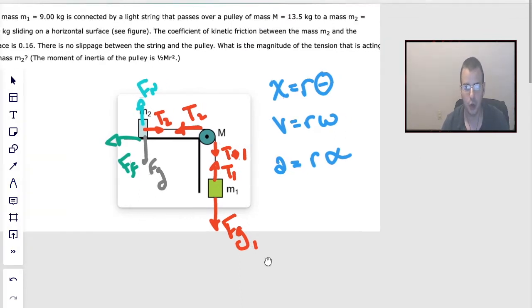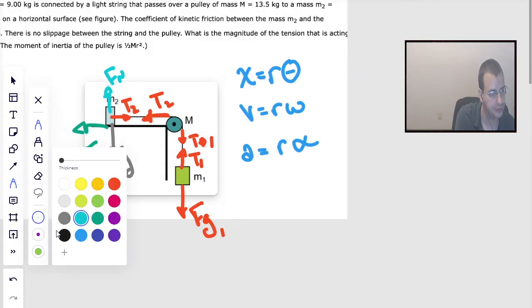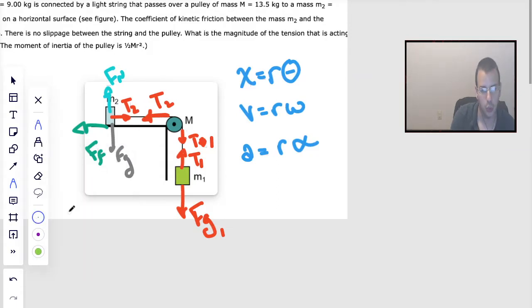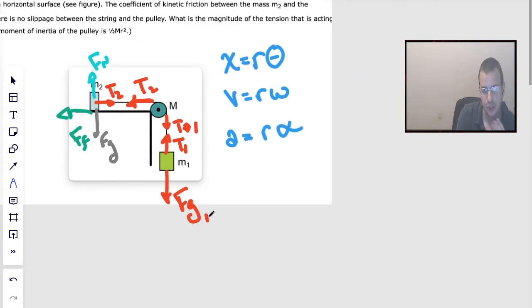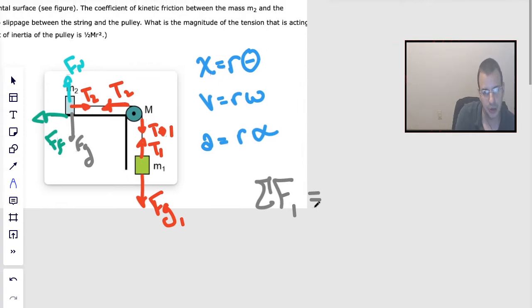Looks complicated, not too bad. We're just going to start writing out equations here. Starting for M1, sum of all forces on mass 1—I'm going to call down positive—is mass 1 times gravity minus tension 1, and that's going to equal mass 1 times acceleration.